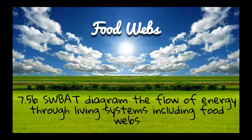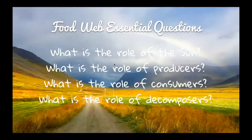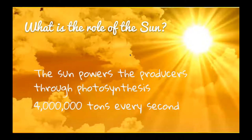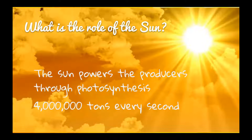At the end of my section, you'll be able to diagram the flow of energy through living systems, including food webs. Our essential questions are: what is the role of the sun in the food web, and what is the role of producers, consumers, and decomposers? The sun is the vital part of plants growing because of photosynthesis. The sun powers producers, and it produces so much energy — 4 million tons every second — without which the rest of the food web would not exist.